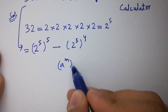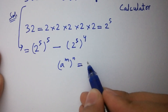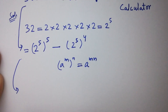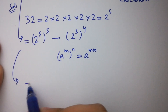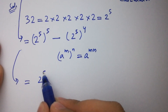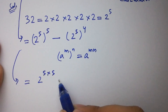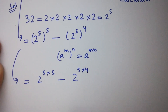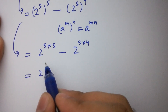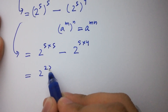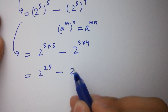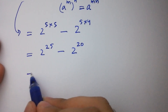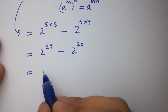Using the rule a to the power m, to the whole power n, equals a to the power m times n, we get 2 to the power 5 times 5, minus 2 to the power 5 times 4. That gives us 2 to the power 25 minus 2 to the power 20.